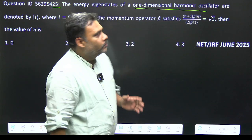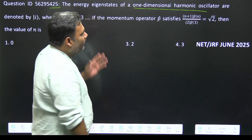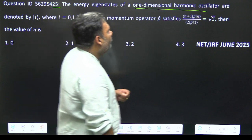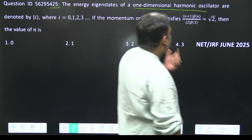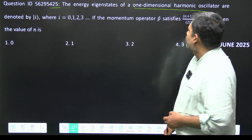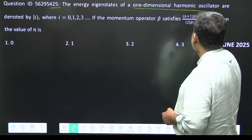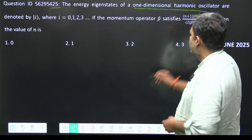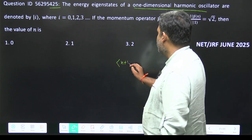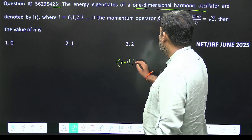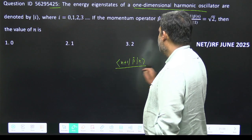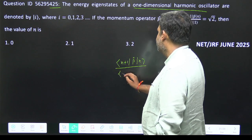Hello friends, let us try to solve one more problem from quantum mechanics. In this problem, we have a harmonic oscillator where p is the momentum operator, and we have the term involving n plus 1, the momentum operator p, and n.